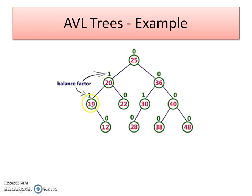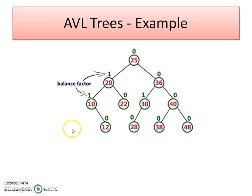For node 20: the left subtree height is 2 and the right subtree height is 1. So 2 minus 1 equals 1, giving a balance factor of 1. For node 10: the height of the left subtree is 0 and the height of the right subtree is 1. So 0 minus 1 equals -1, giving a balance factor of -1. In this way you can find the balance factor of every node.